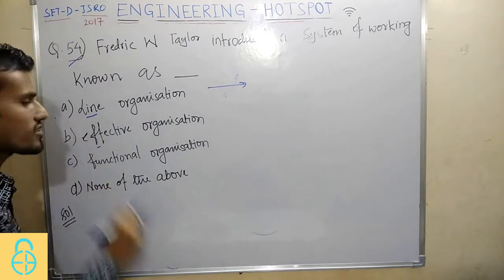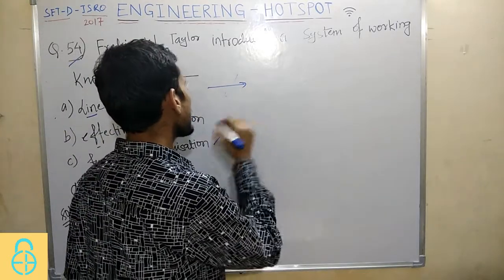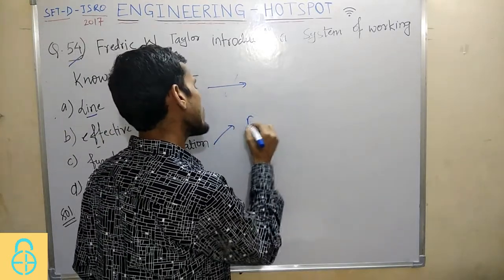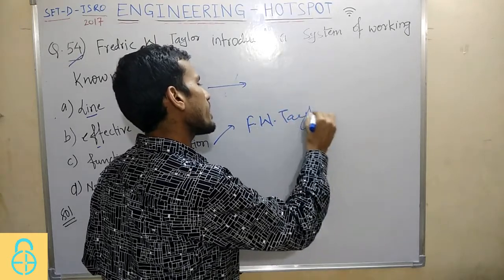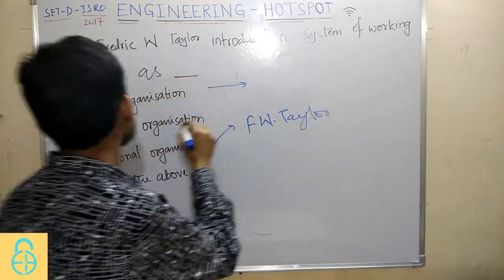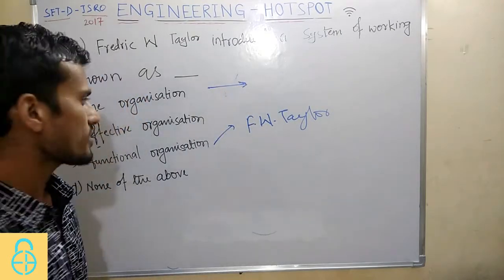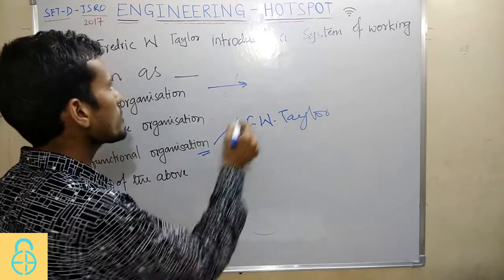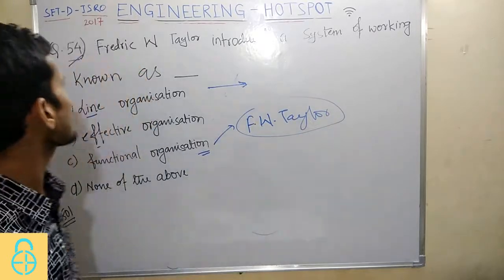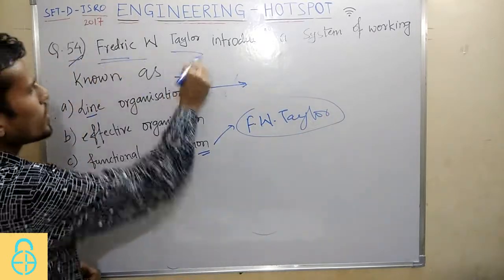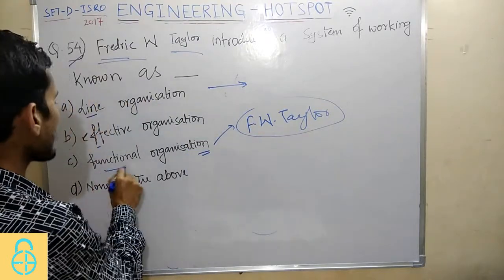The third one is Functional Organization, which was introduced by F.W. Taylor. Line Organization, by contrast, was introduced by J.T. Mooney. The question specifically asks who introduced this system of working, and the answer is F.W. Taylor, who introduced Functional Organization.